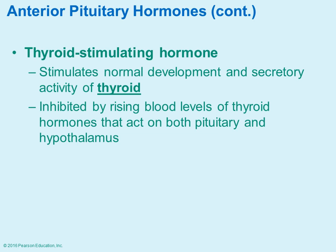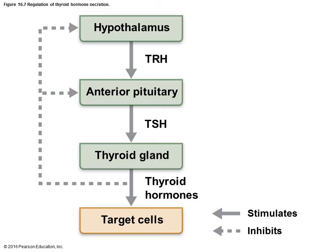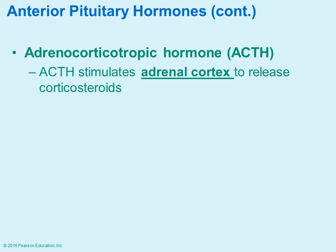Thyroid stimulating hormone stimulates the secretion and normal development of the thyroid. If thyroid hormone levels increase, they decrease or inhibit the thyroid stimulating hormone — a negative feedback mechanism. The diagram shows the regulation of stimulus versus inhibition and that feedback loop.